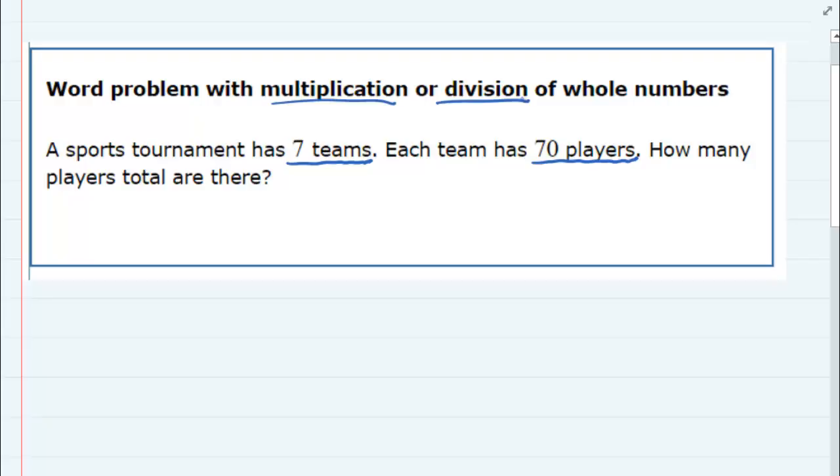So if each team has 70 players, then one team would have 70. Two teams, we would double that so that we would have 140. So one team, 70 players. Two teams would be 140 players and so on.